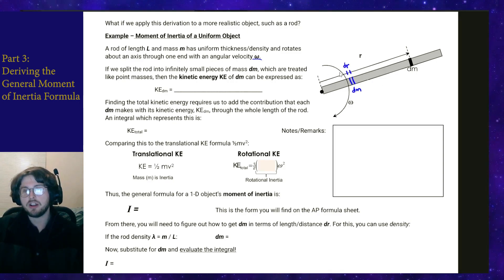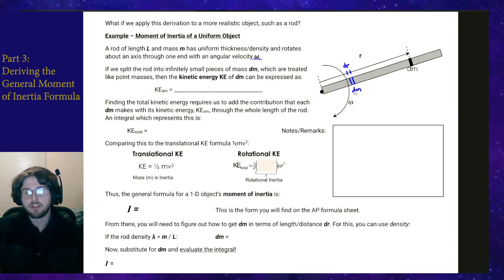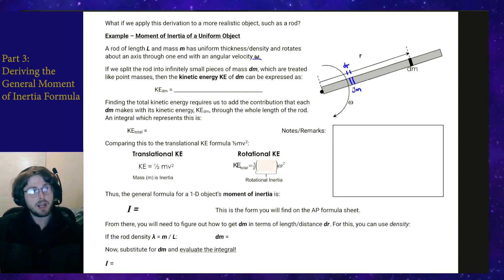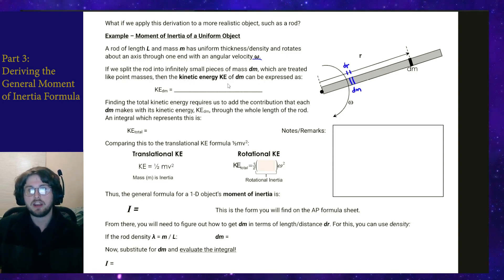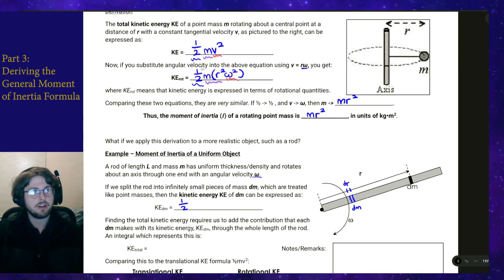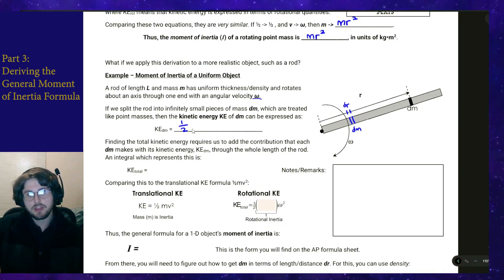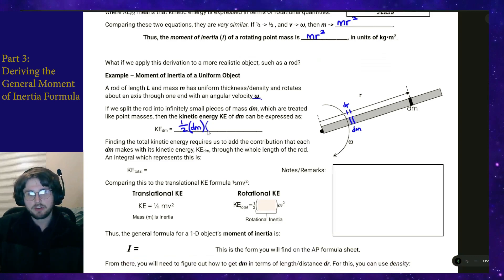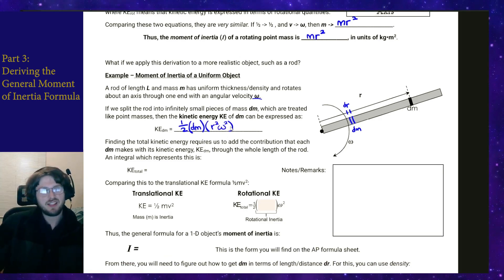Each of these dm's is a different distance r away from the pivot point, which means dm is technically intertwined with this r coordinate. We need to keep that in mind when we start integrating. For now, all we need to do is figure out a formula for the kinetic energy of a singular mass dm. Given angular velocity omega, the kinetic energy is one half times dm times r squared omega squared.